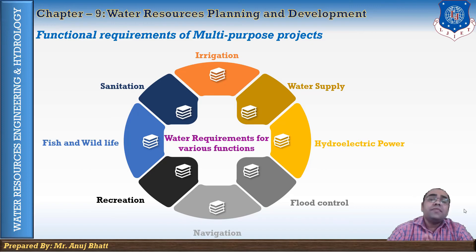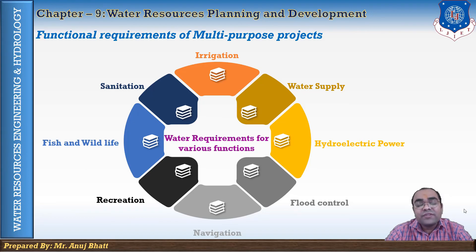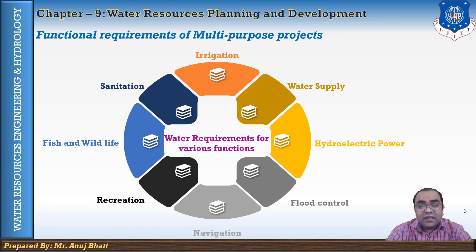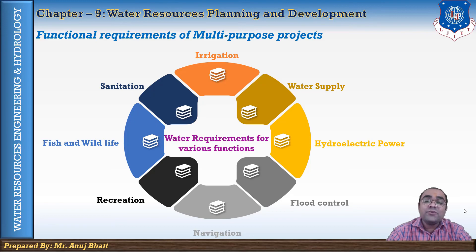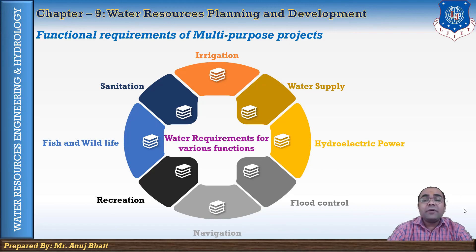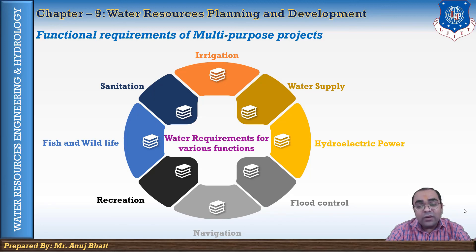The eighth functional requirement is sanitation. The maintenance of adequate flows downstream is the main sanitary function of the reservoir. Usually, this may be easily combined with the release of water for other functions. A secondary sanitary requirement in some areas may be that the reservoir be operated to control mosquito growth, and this is usually achieved by causing rapid fluctuation of water level. So these eight are the functional requirements of multi-purpose projects: irrigation, water supply, hydroelectric power, flood control, navigation, recreation, fish and wildlife, and sanitation.